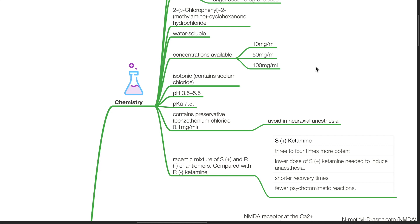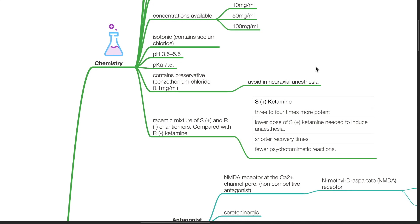Avoid its use in neuraxial anesthesia. Ketamine consists of a racemic mixture of S-dextro- and R-levo-enantiomers. Compared with R-levo-ketamine, S-dextroketamine is 3 to 4 times more potent. Lower doses of S-dextroketamine are needed to induce anesthesia. It provides shorter recovery times and there are fewer psychotomimetic reactions.